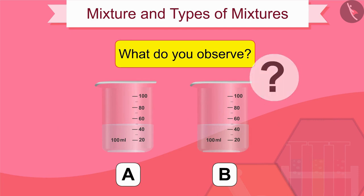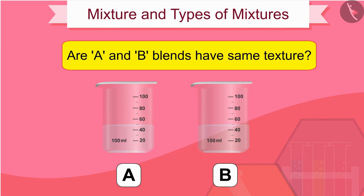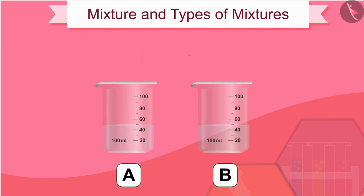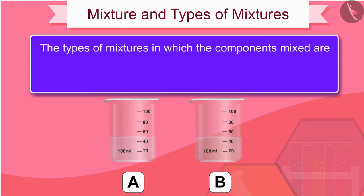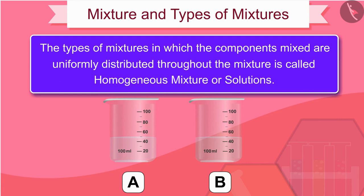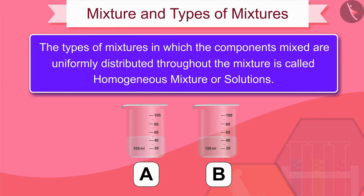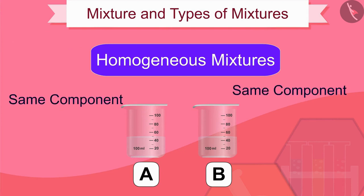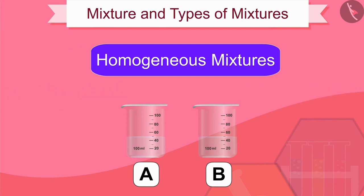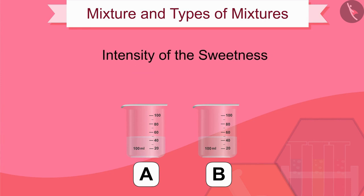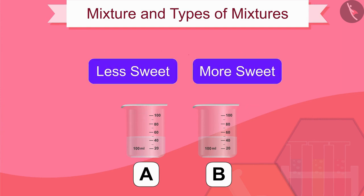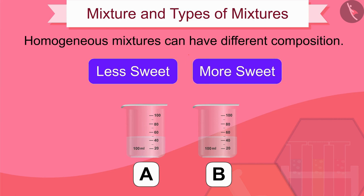What do you observe — are A and B blends of the same texture? The types of mixtures in which the components are uniformly distributed throughout the mixture are called homogeneous mixtures or solutions. Mixtures A and B are both homogeneous mixtures made from the same component. However, if we look at the intensity of sweetness in beakers A and B, we find they are different, showing that homogeneous mixtures can have different compositions.